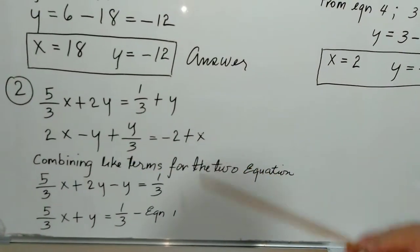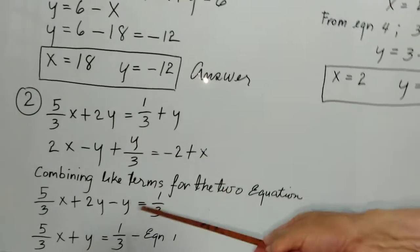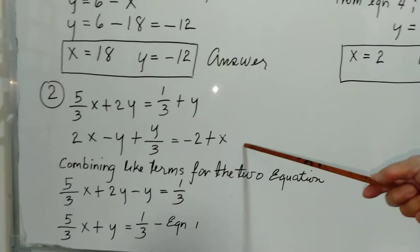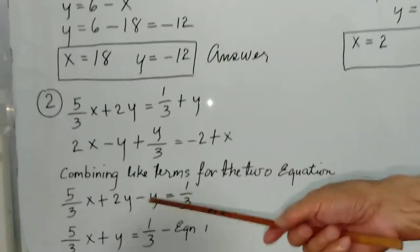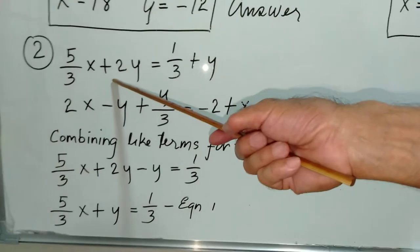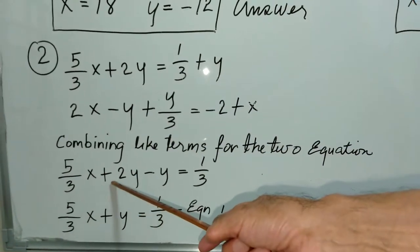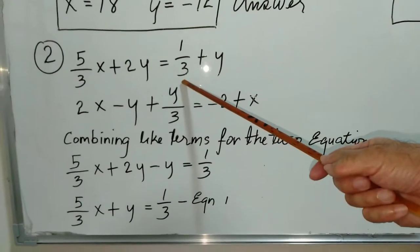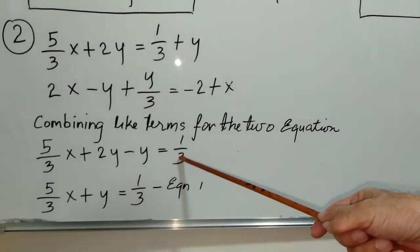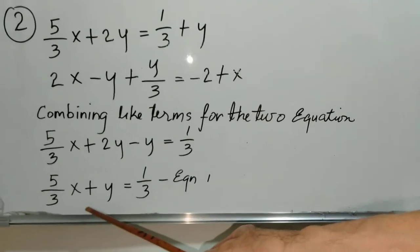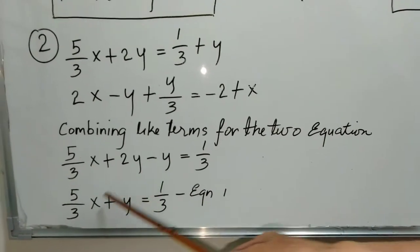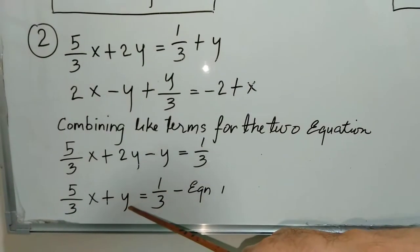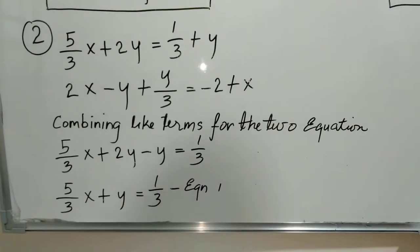We combine like terms for both equations. For equation 1, 5 over 3x plus 2y — we transpose y — so what remains on the right side is one-third, and on the left side we have 5 over 3x plus 2y minus y, which simplifies to 5 over 3x plus y equals one-third.